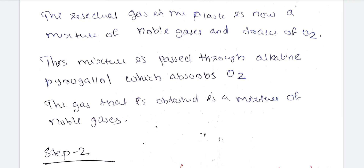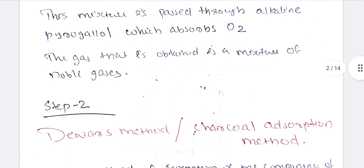In the first step, we extract the noble gases. In the second step, we separate the noble gases. The noble gases belong to the 18th group of the periodic table.